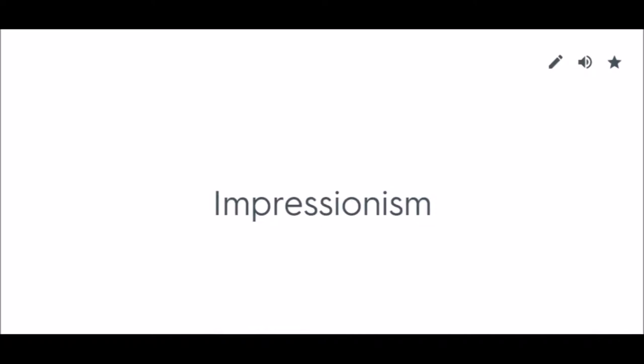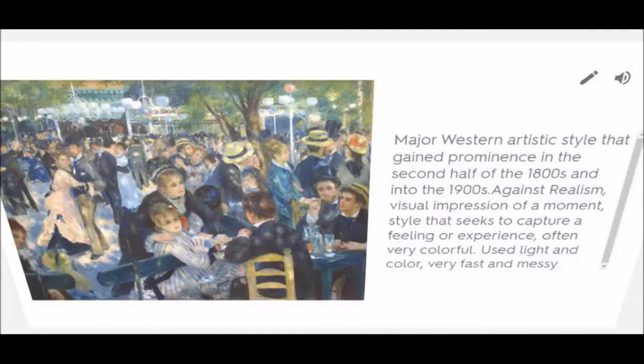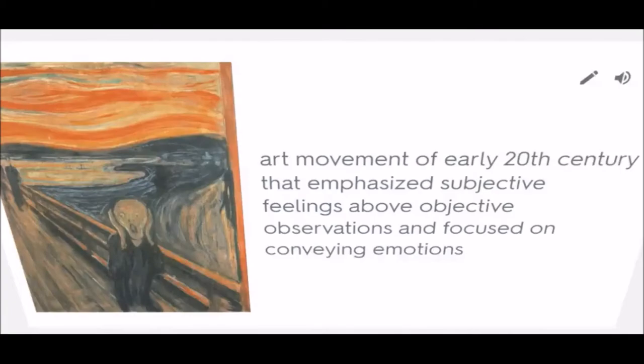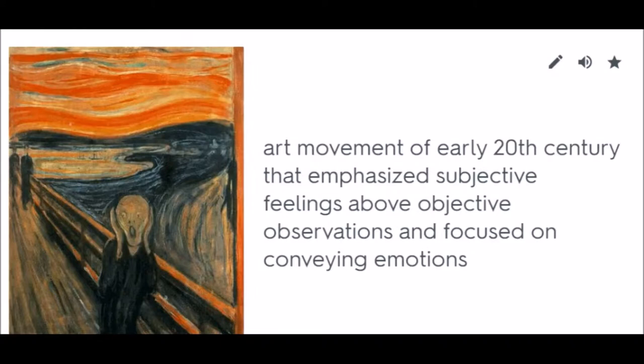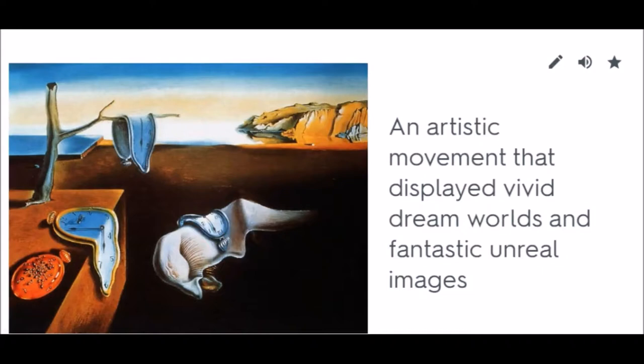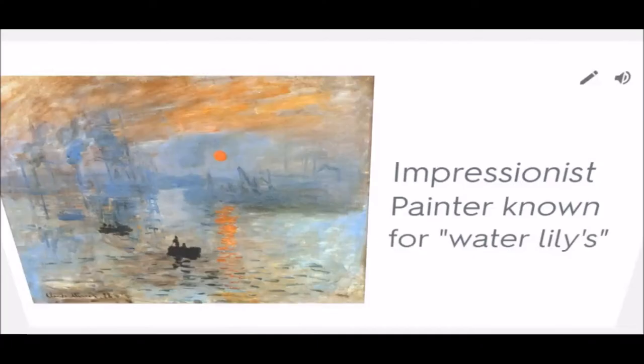Impressionism: A major Western artistic style that gained prominence in the second half of the 1800s and into the 1900s. Against realism, it captures a visual impression of a moment — a style that seeks to capture a feeling or experience, often very colorful, using light and color in a fast and messy style. Expressionism: An art movement of the early 20th century that emphasized subjective feelings above objective observations. Surrealism: Displayed vivid dream worlds and fantastic unreal images. Monet: Impressionist painter known for water lilies.